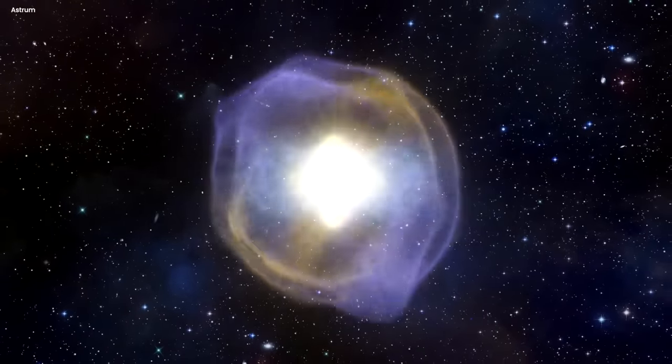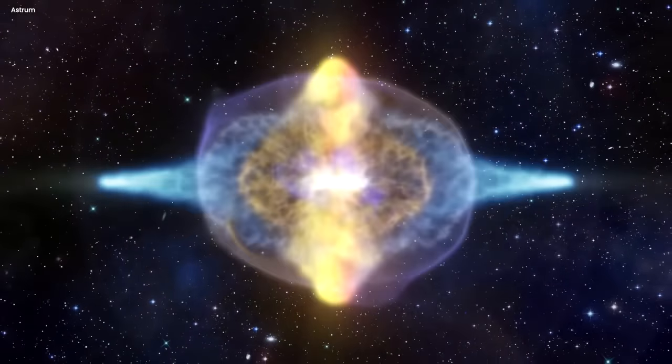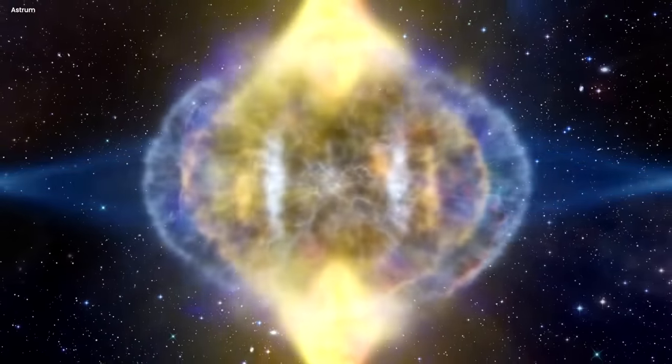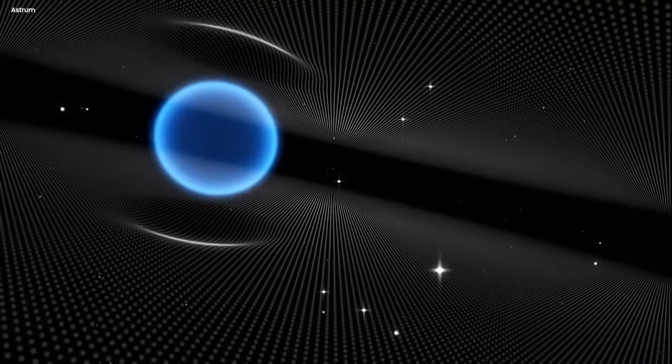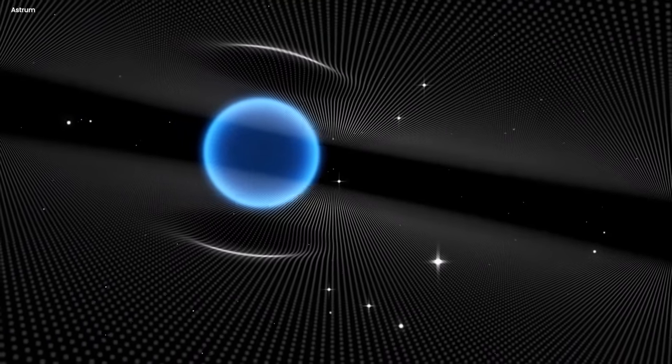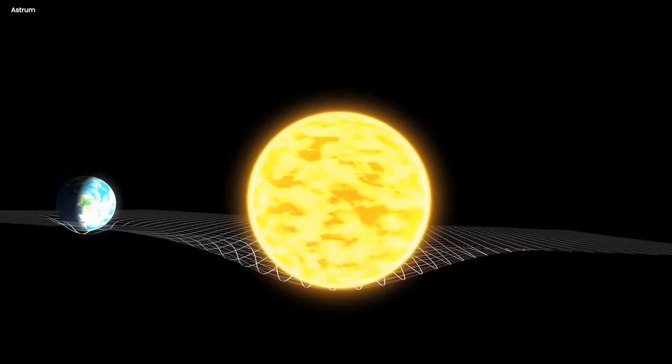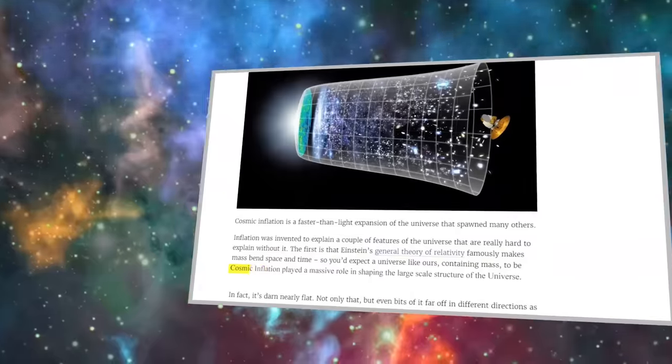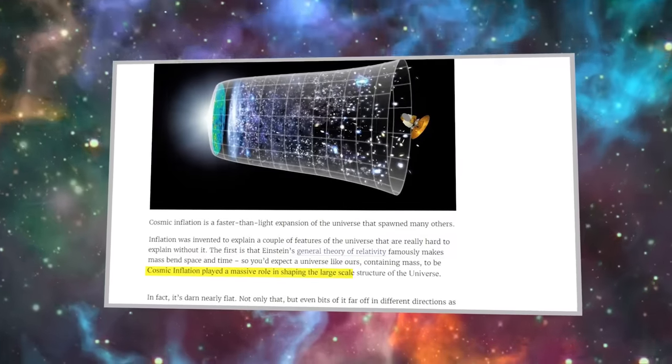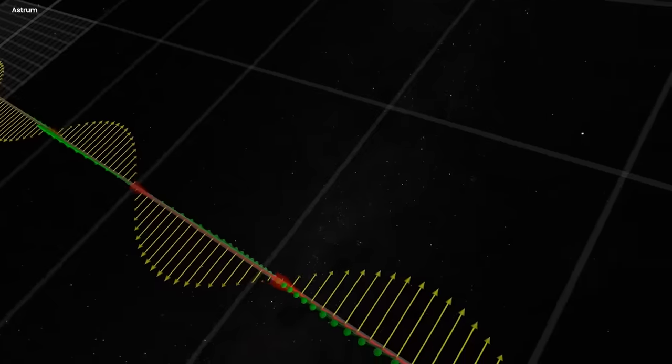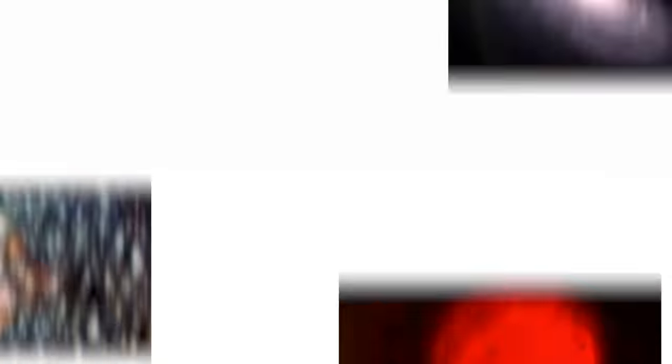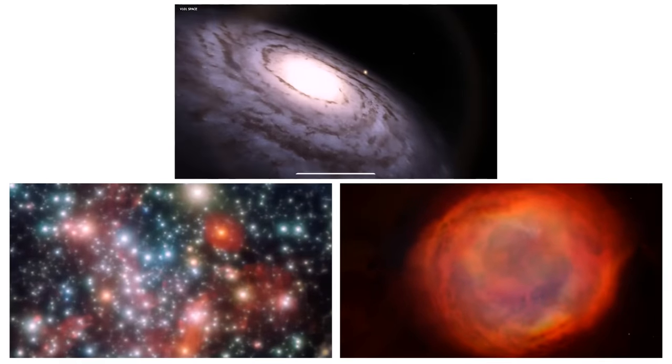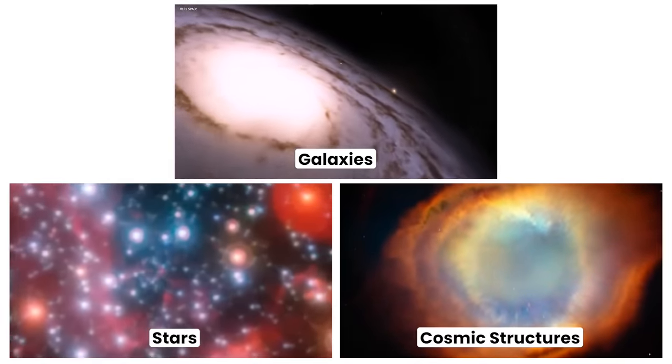The expansion of the universe started with an extraordinary burst of rapid expansion known as cosmic inflation. During this phase, the universe expanded at an unimaginable rate, far exceeding the speed of light. It's like the fabric of space itself was stretching and stretching, taking everything within it along for the ride. Cosmic inflation played a massive role in shaping the large-scale structure of the universe. It smoothed out irregularities, homogenized the distribution of matter and energy, and set the stage for the subsequent formation of galaxies, stars, and other cosmic structures.